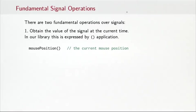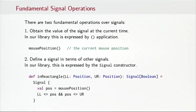So let's have a closer look at signals. There are two fundamental operations over signals. First I can obtain the value of a signal at the current time. In our FRP signal library that's expressed by applying the signal to an empty parameter list. So mousePosition() would give us the mousePosition at the current time. The second fundamental operation is to define a signal in terms of other signals. In our library that's expressed by the signal constructor. So let's do an example.